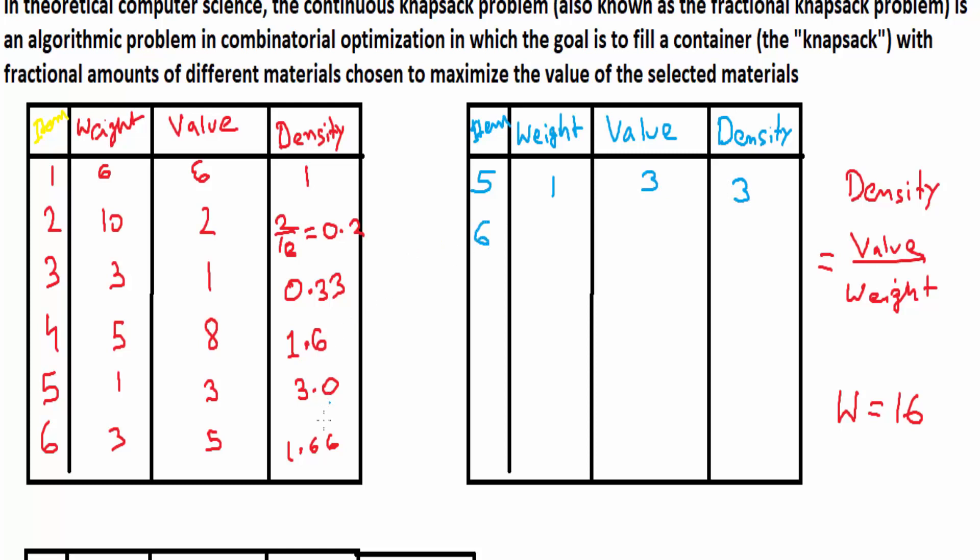Next is 6, which is 3, 5, 1.66. Next we have 4, which is 5, 8, 1.6. Next is 1, which is 6, 6, 1. Then 3, which is 3, 1, 0.33. Next we have 2, which is 10, 2, 0.2. Now we have sorted and arranged our table.